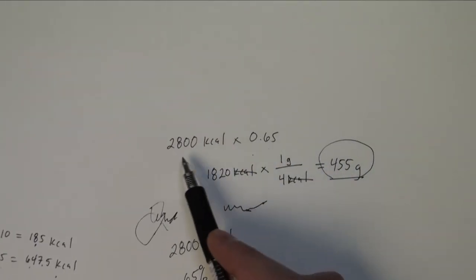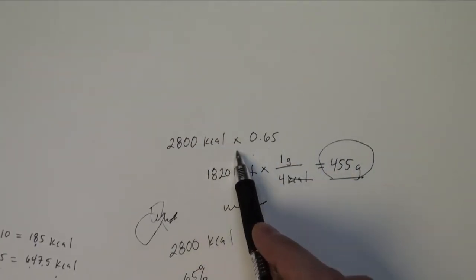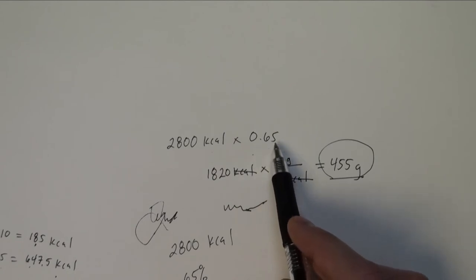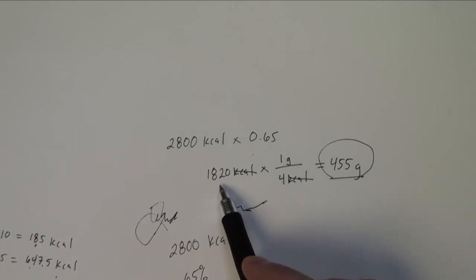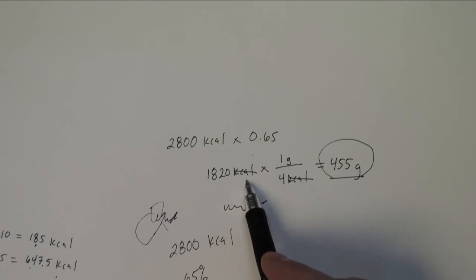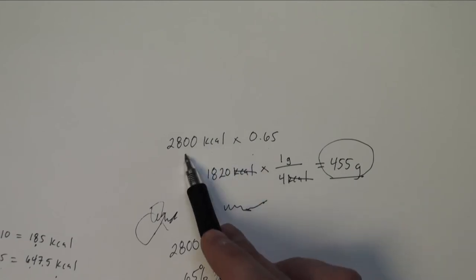So now if we go to do some of our math, just like we had done before, we'll take 2,800 kilocalories and multiply that by 0.65. What that's going to do is tell me that 1,820 kilocalories is 65% of this total of 2,800.